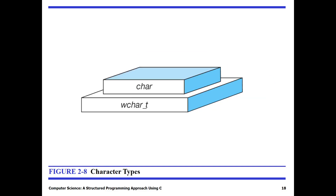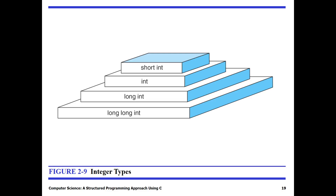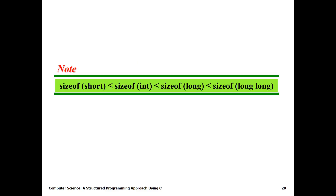The integer types differ in their size and preciseness. We have short int, int, long int, and long long int. The size of the short integral type is smaller than or equal to the size of int. An int is smaller than or equal to the size of long, and long is less than or equal to the size of long long int.